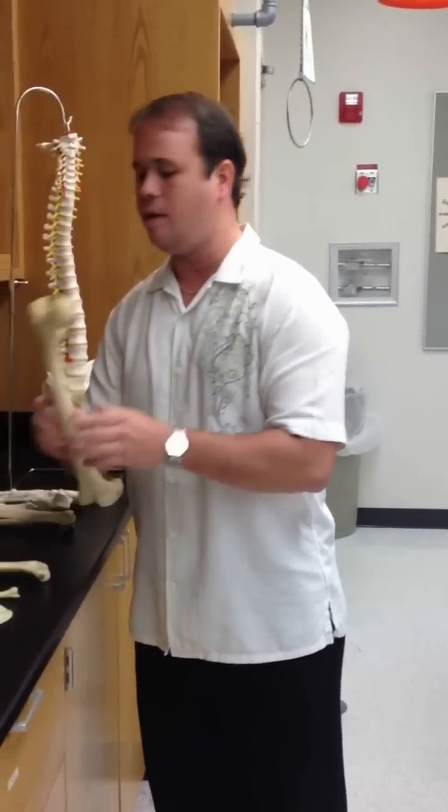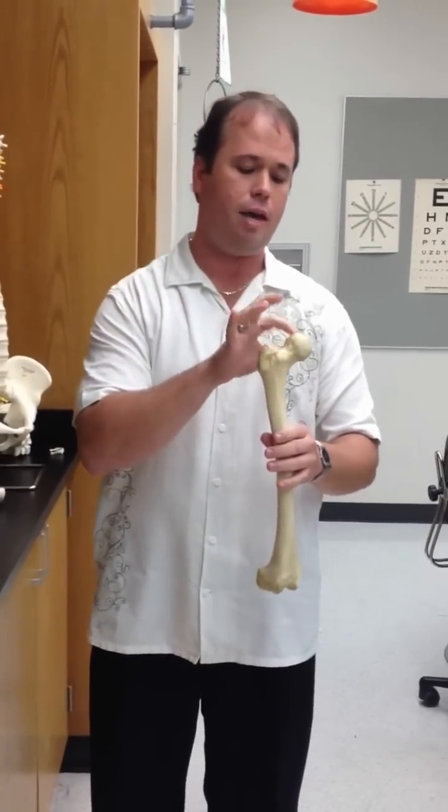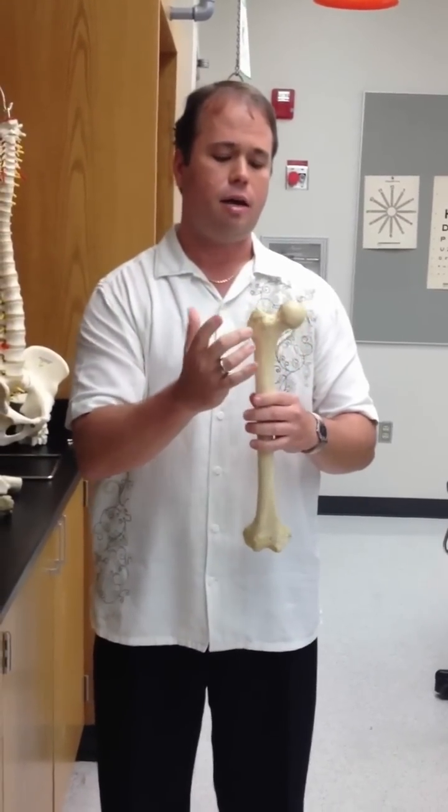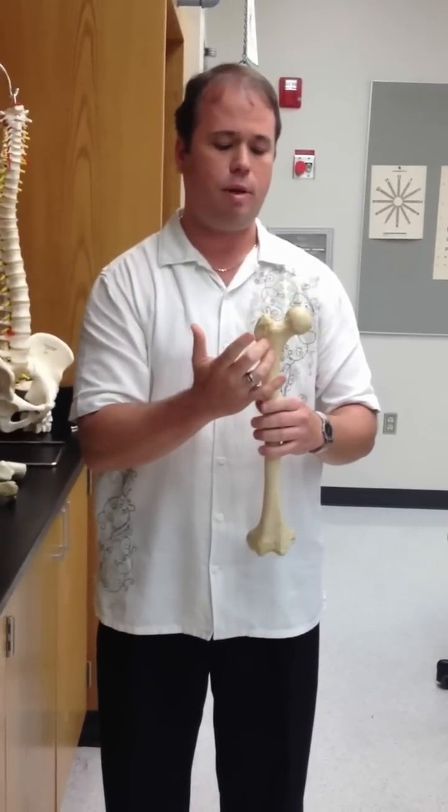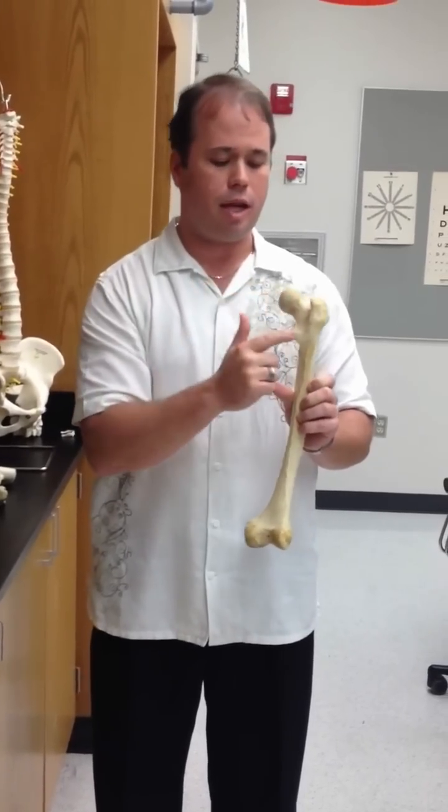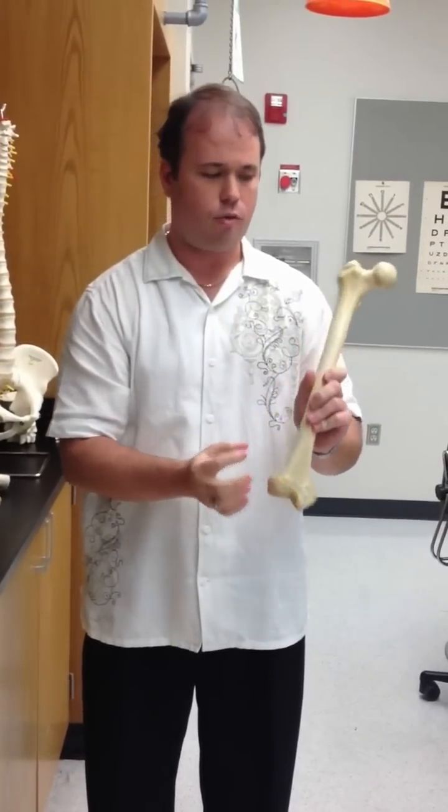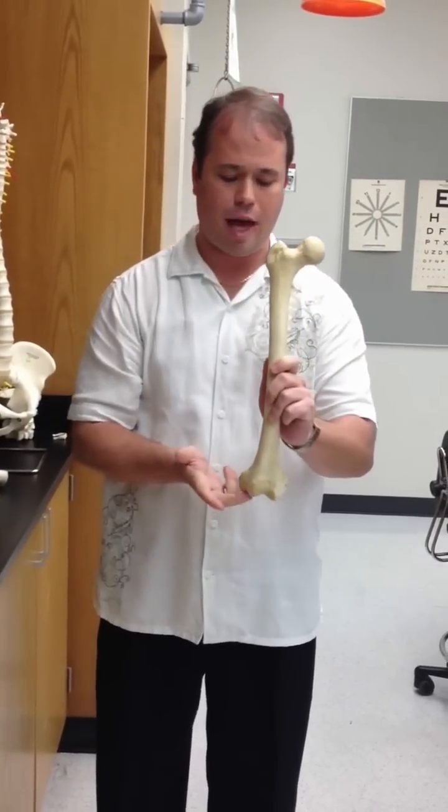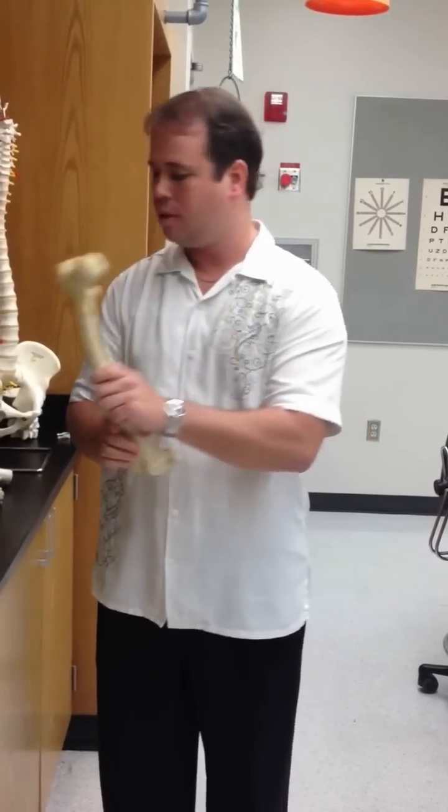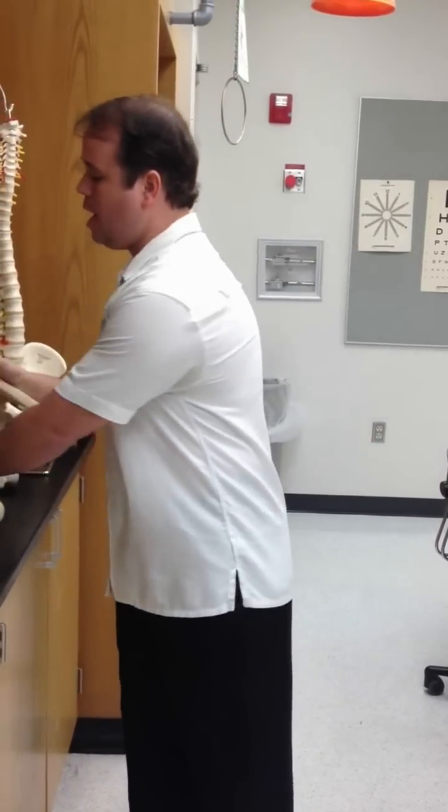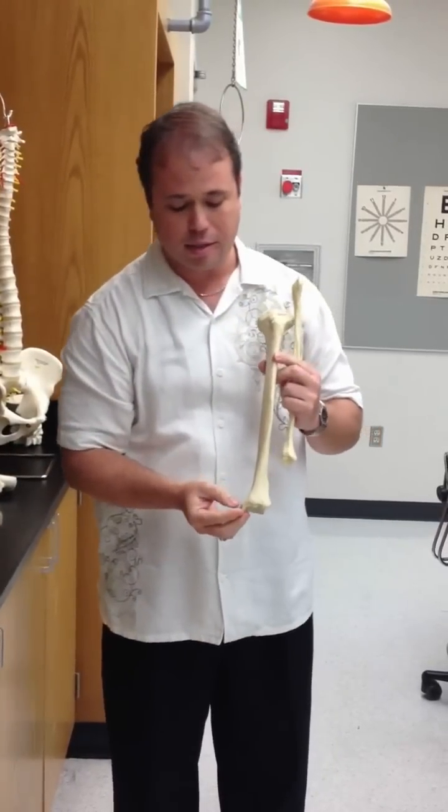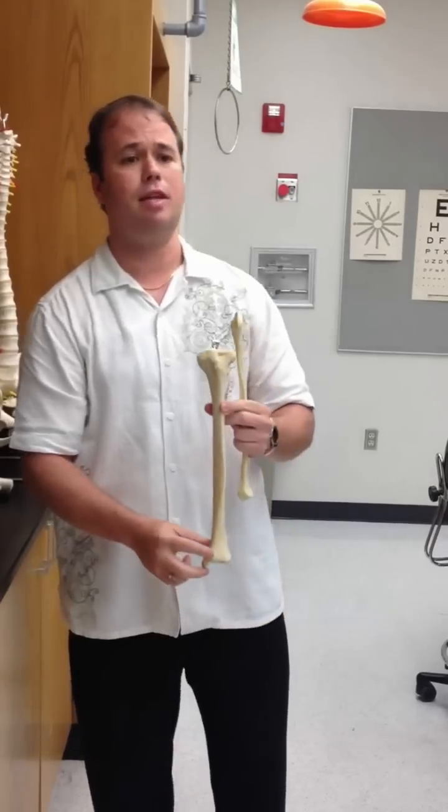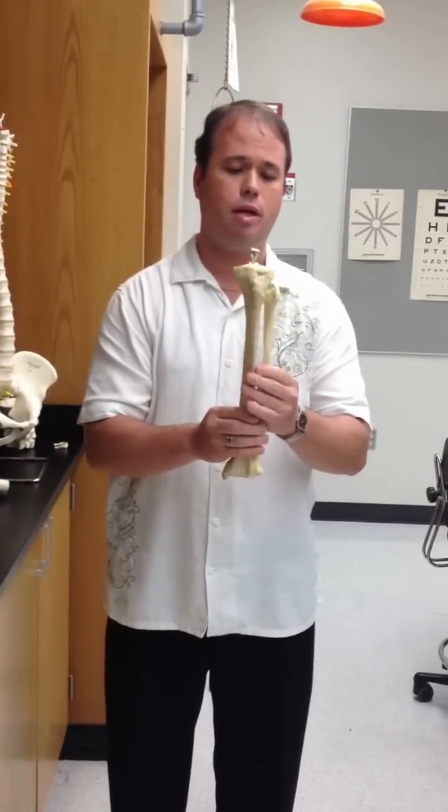From there with the femur, we have the femoral head. We have the anatomical neck. The surgical neck would be here. We have the greater trochanter, the lesser trochanter, smooth patellar surface. This would be medial, so we have the lateral condyle and the medial condyle. From there, distally, we have the tibia and the fibula. The tibia is medial, so this would be the medial malleolus. This would actually be the left tibia. The fibula would be lateral, containing the lateral malleolus of fibula.